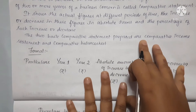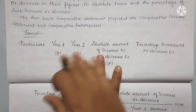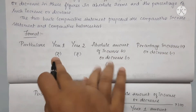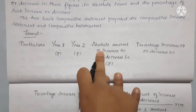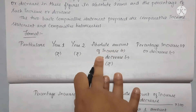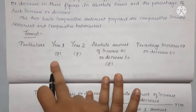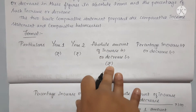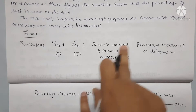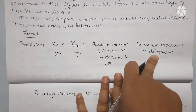The table structure includes: particulars, the first year, the second year, and then the absolute amount of increase or decrease. If there is an increase or decrease, we check the number.